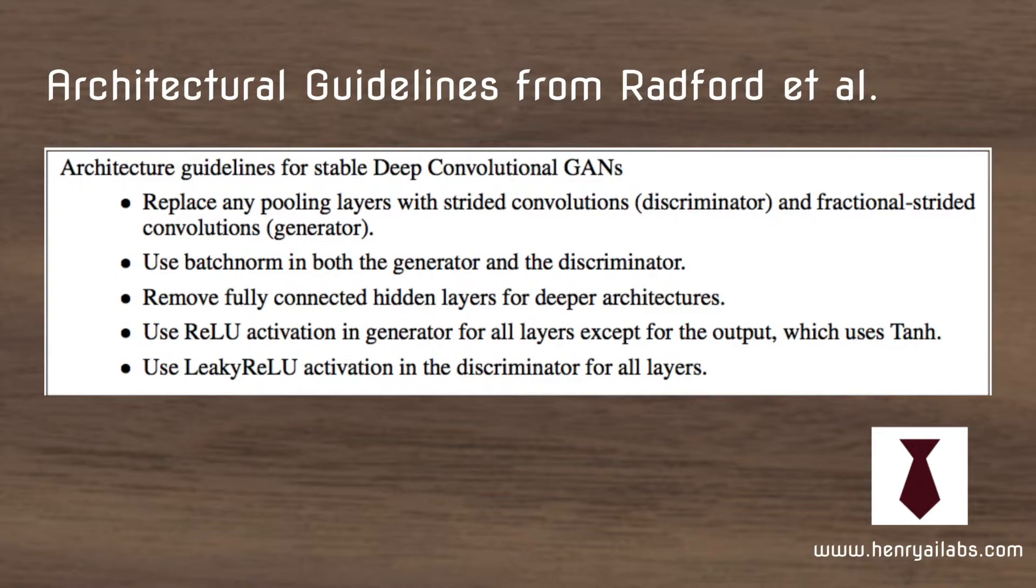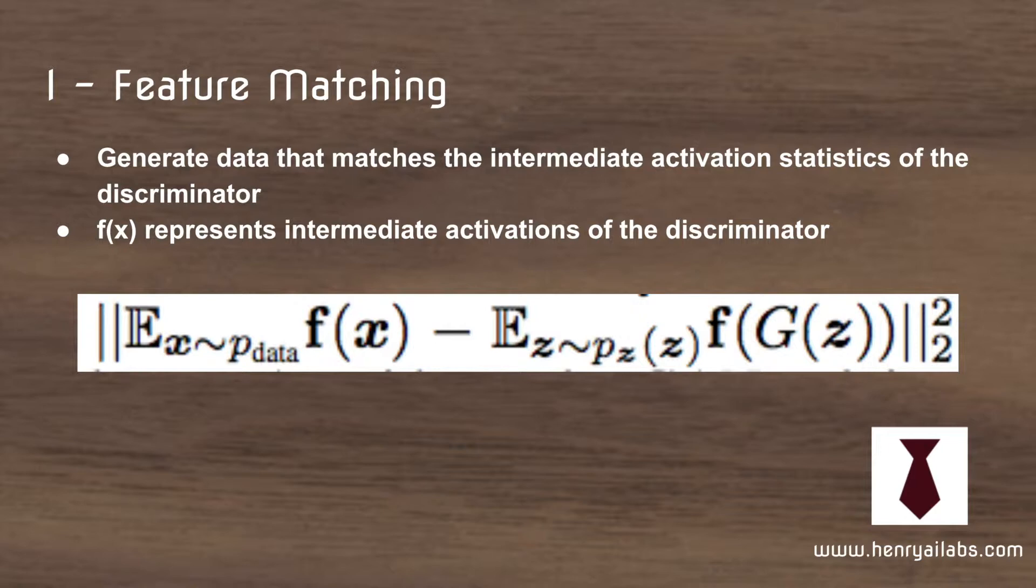As an activation function heuristic, use the ReLU activation and they say use leaky ReLU activation in the discriminator. Practically, when you find some code on GitHub, the leaky ReLU slope is usually set to 0.2. These are the fundamental heuristic guidelines for the DCGAN paper.